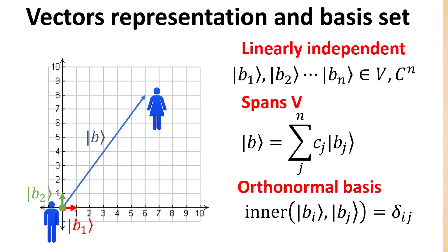In this video, we introduce the concept of vector representation and basis set. We discuss what constitutes a linearly independent basis set, and how linear combinations of these basis vectors allow us to span the vector space. We also introduce the orthonormal basis set, and extend these ideas of Euclidean vectors to the complex vector space.